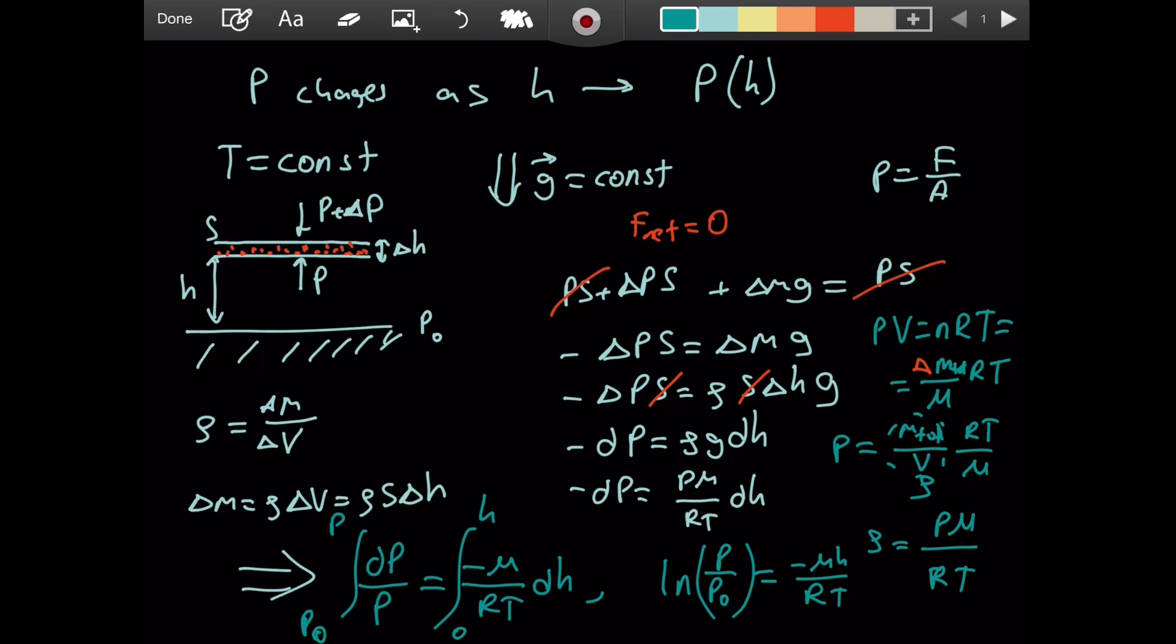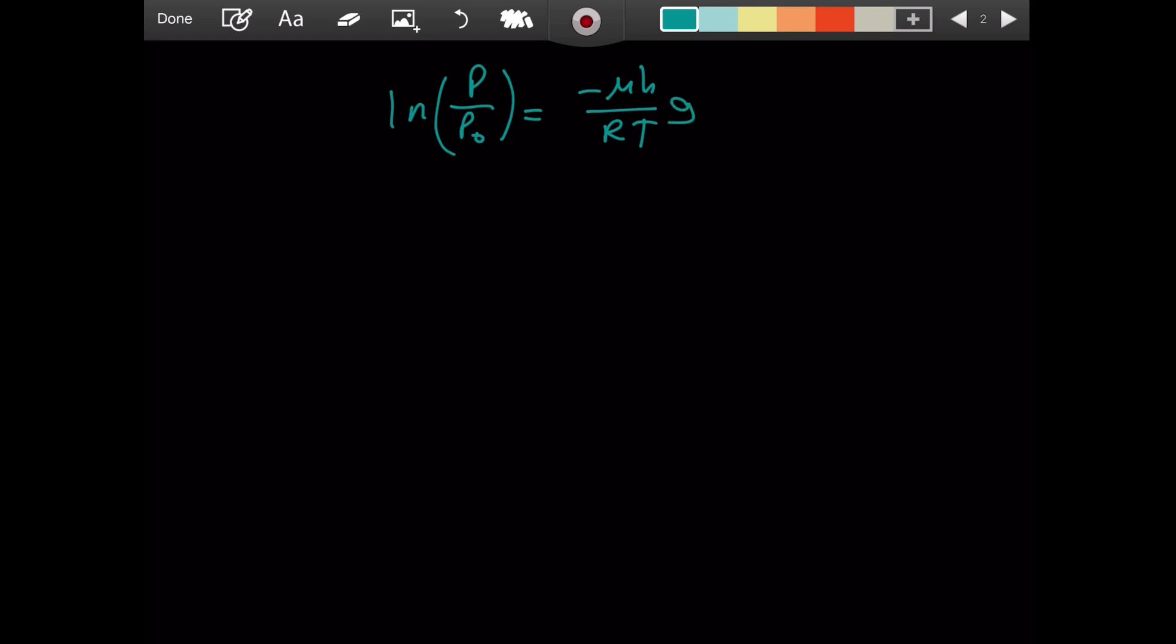Let me write this on a new page. We have ln(P over P naught) equaling negative MgH over RT. Wait, there should be g - we forgot this when substituting for rho. Taking both sides to the power of e, we get P over P naught equals e to the power of negative MgH over RT. So P as a function of H equals P naught times e to the power of negative MgH over RT.